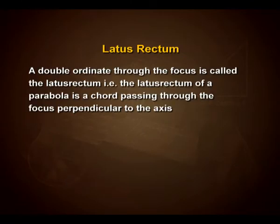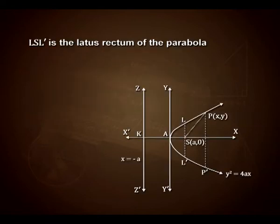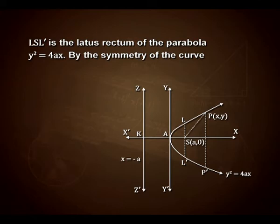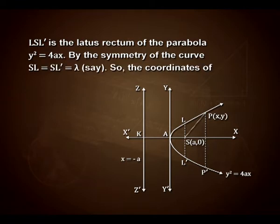Latus rectum: a double ordinate through the focus is called the latus rectum. That is, the latus rectum of a parabola is a chord passing through the focus perpendicular to the axis. LSL' is the latus rectum of the parabola y² = 4ax. By the symmetry of the curve, we have SL = SL'.